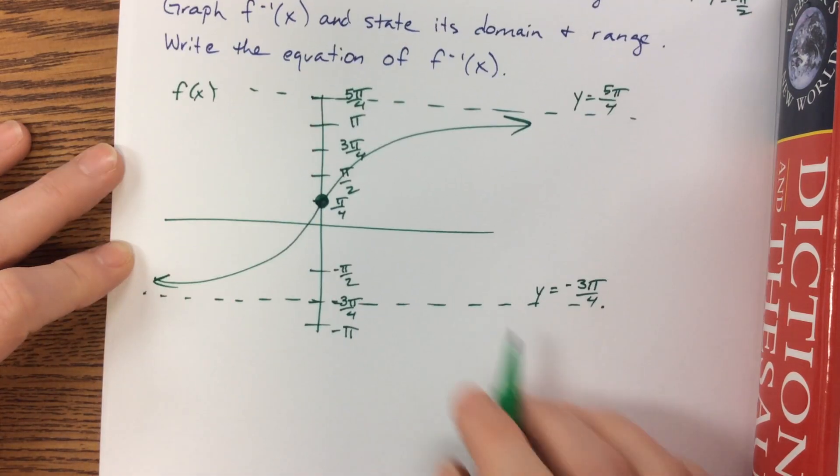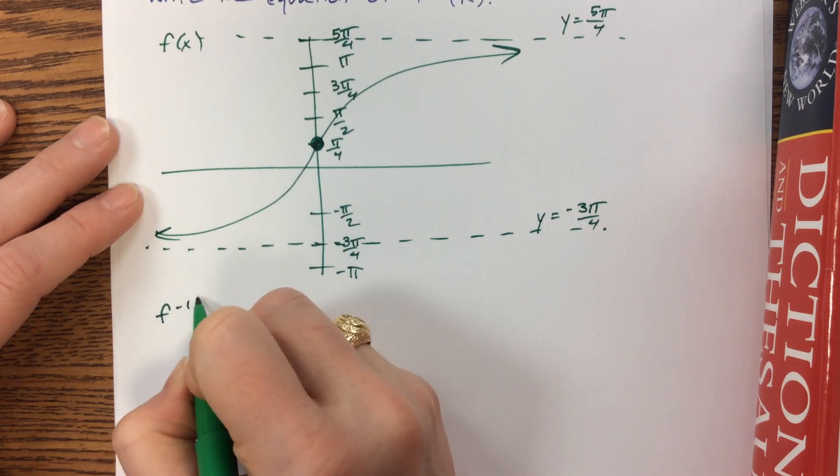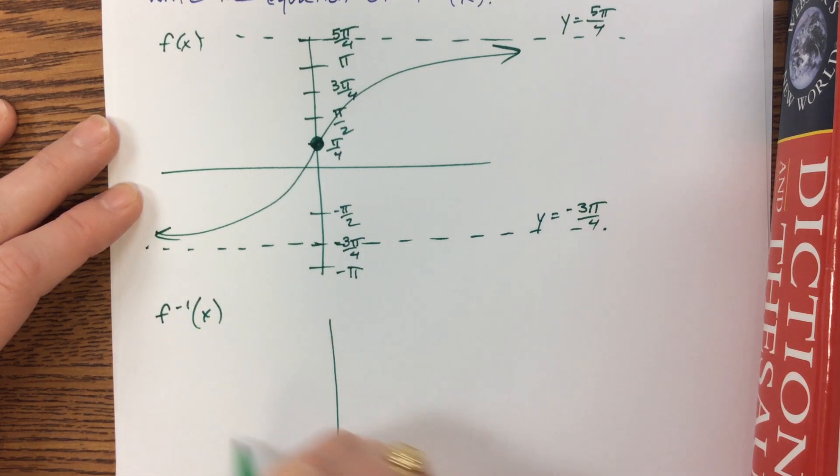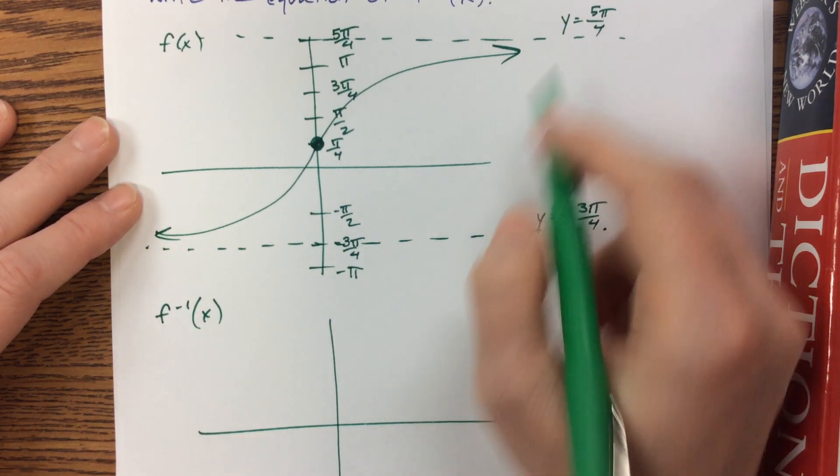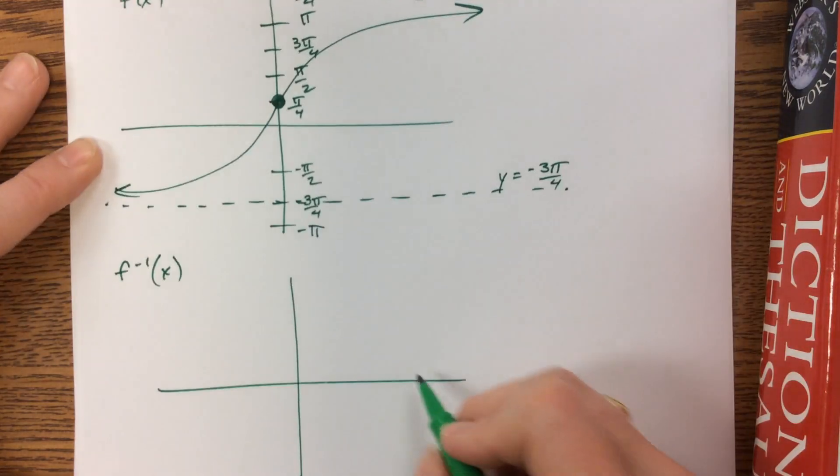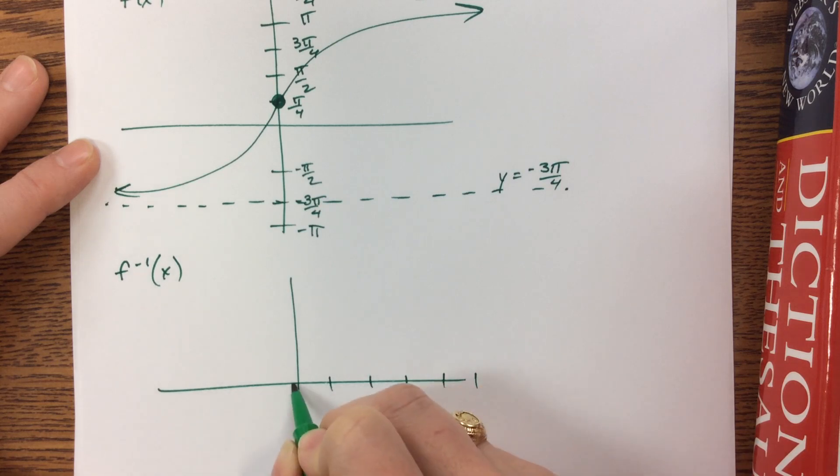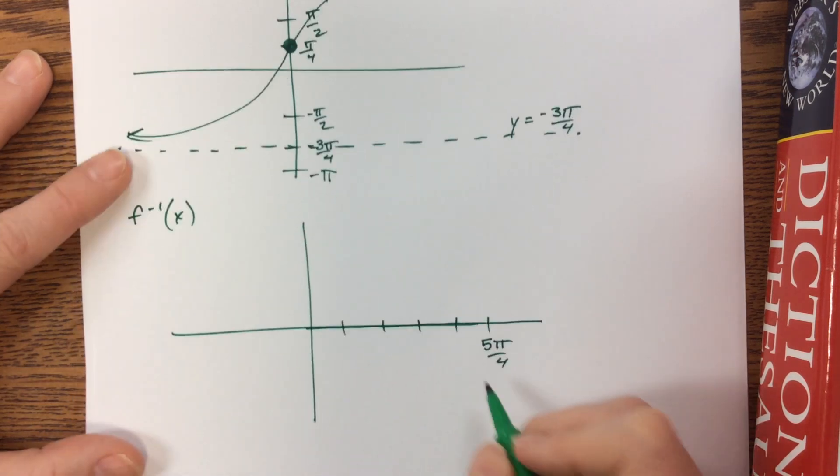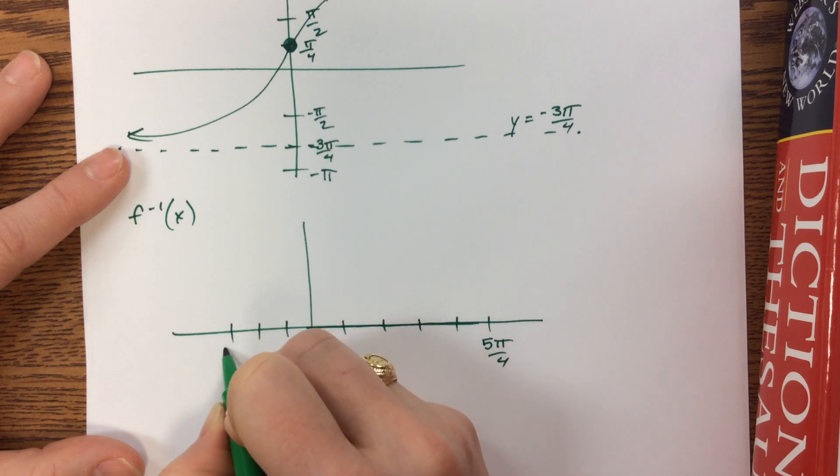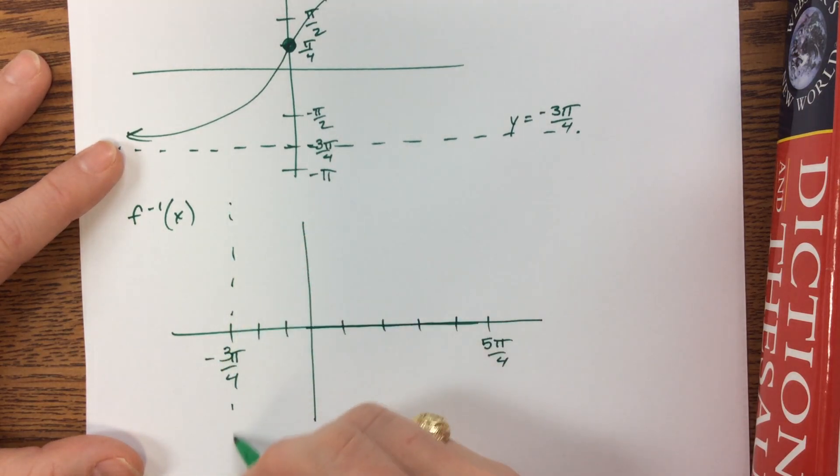And so when we go to graph the inverse of that, I have an asymptote, and instead of y equals 5π/4, it becomes x. Let's do 1, 2, 3, 4, 5π/4. And then I need 1, 2, 3π/4, negative 3π/4. So then these asymptotes are here.